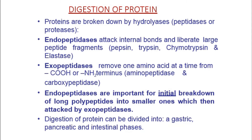The second kind of enzymes are called exopeptidases. Their role is to remove amino acids from the amino terminal and also from the carboxyl terminal. Endopeptidases first break the larger molecules into smaller ones, and then exopeptidases act on those smaller fragments.